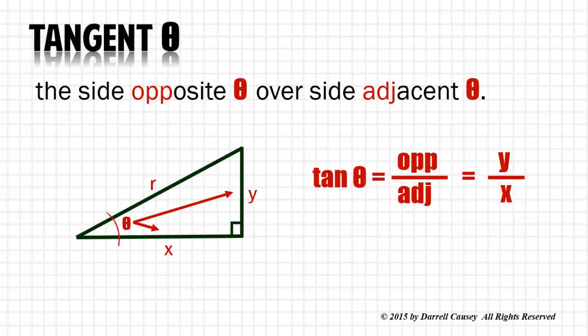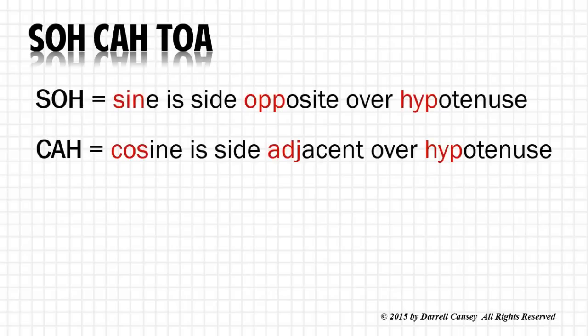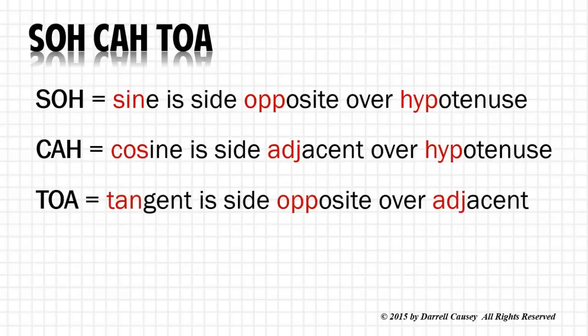It's very important that we get these ideas down. Here's a way to help you remember: SOH CAH TOA. Sine is opposite over hypotenuse, cosine is adjacent over hypotenuse, and tangent is opposite over adjacent.